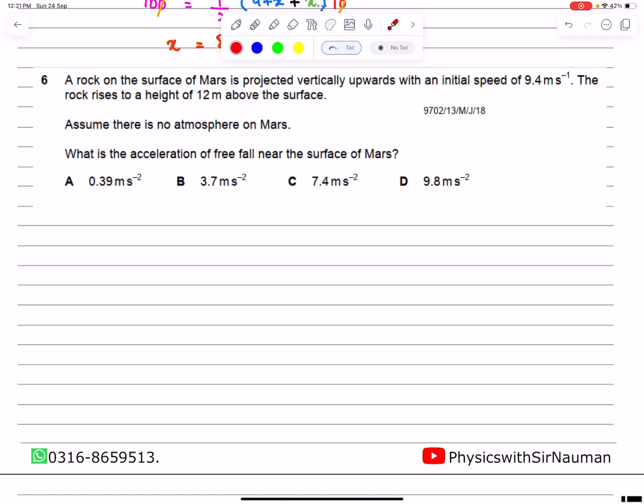A rock on the surface of Mars is projected vertically upwards with an initial speed of 9.4 meters per second. The rock rises to a height of 12 meters above the surface.